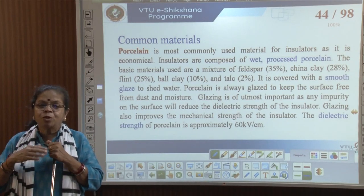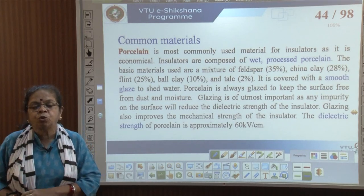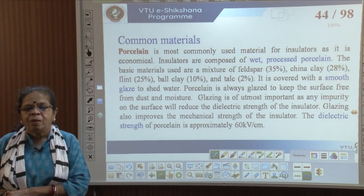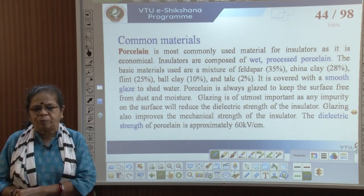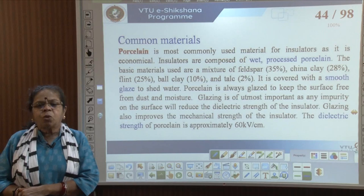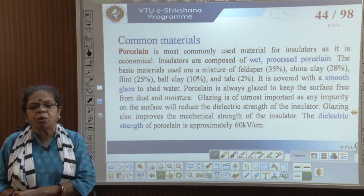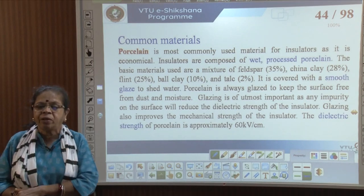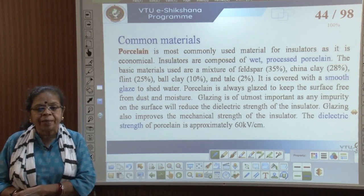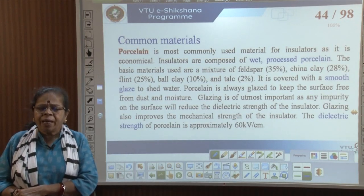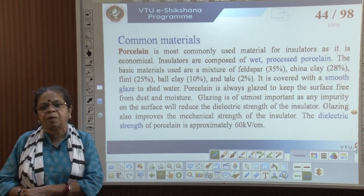The glaze is smooth so water does not stick to it — water slips away, shedding water from the surface. Glazing prevents the surface from accumulating dust and moisture. Any impurity on the surface would reduce the dielectric strength, and glazing also improves the mechanical strength of the insulator. The dielectric strength of porcelain is approximately 60 kilovolts per centimetre.